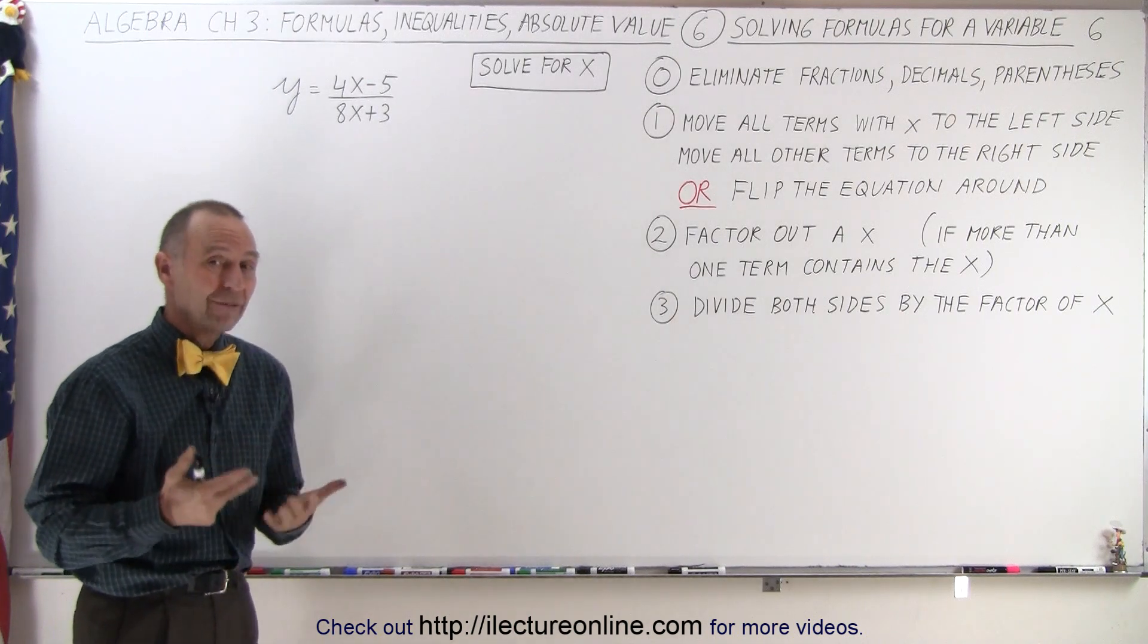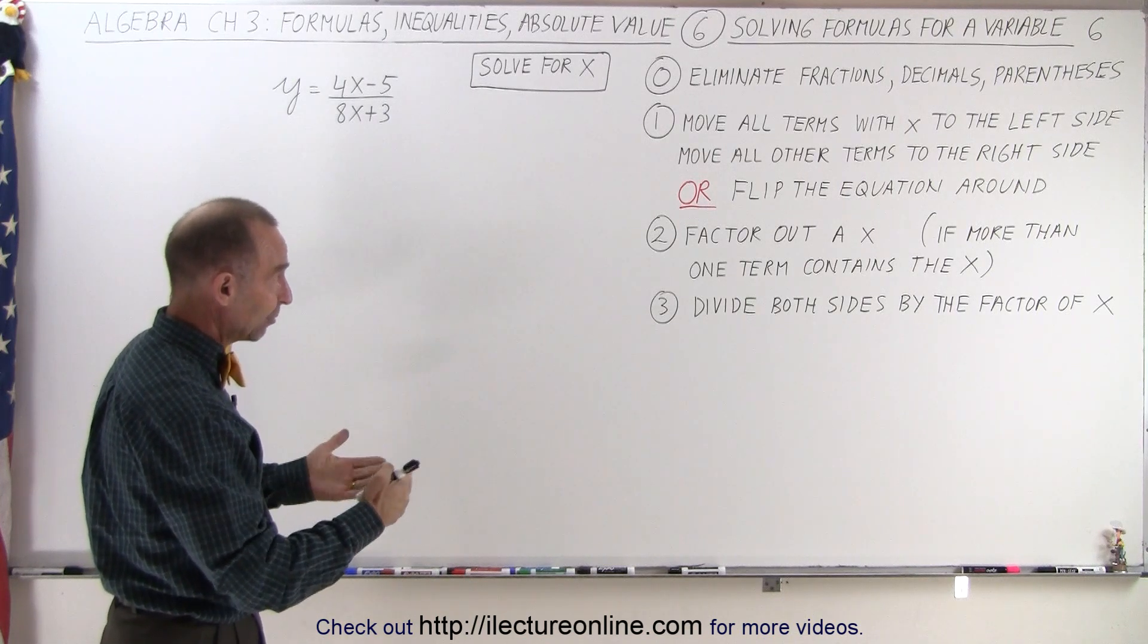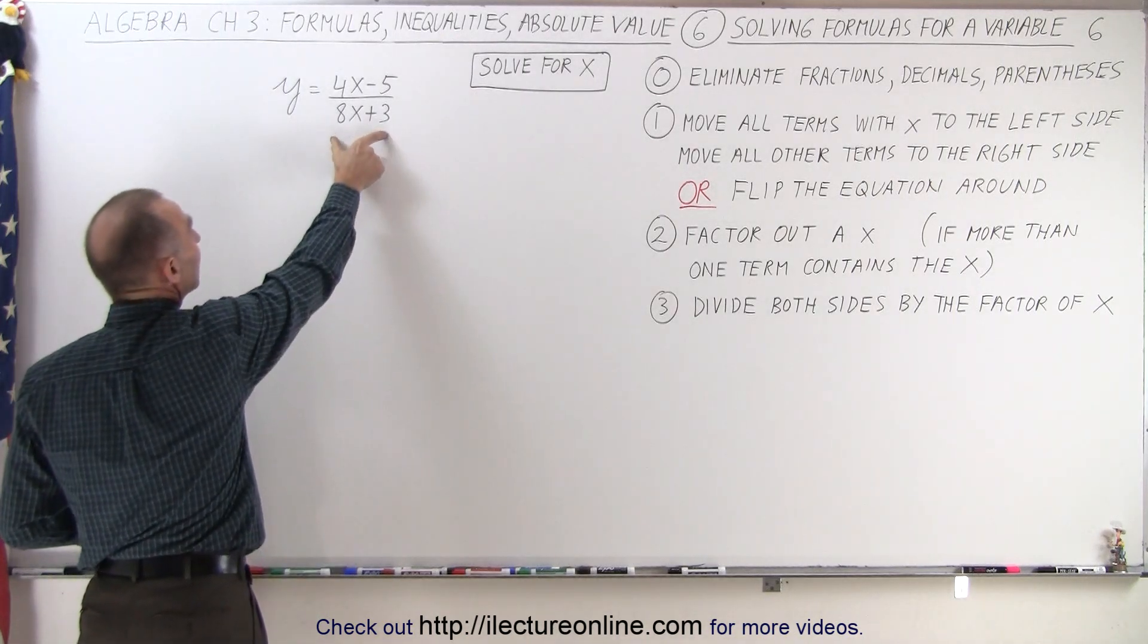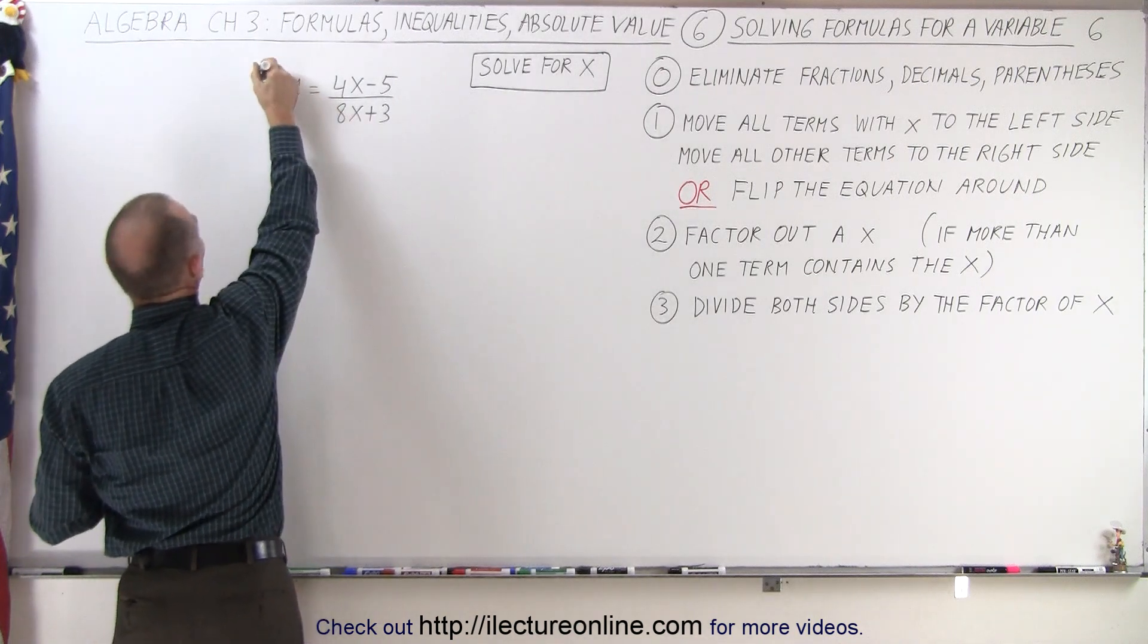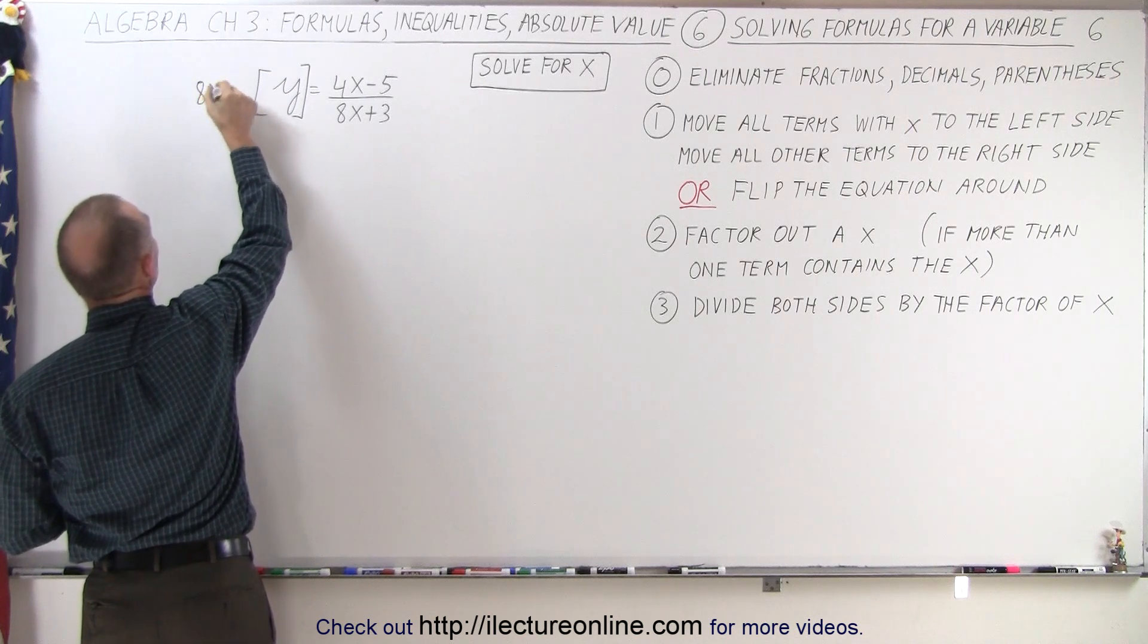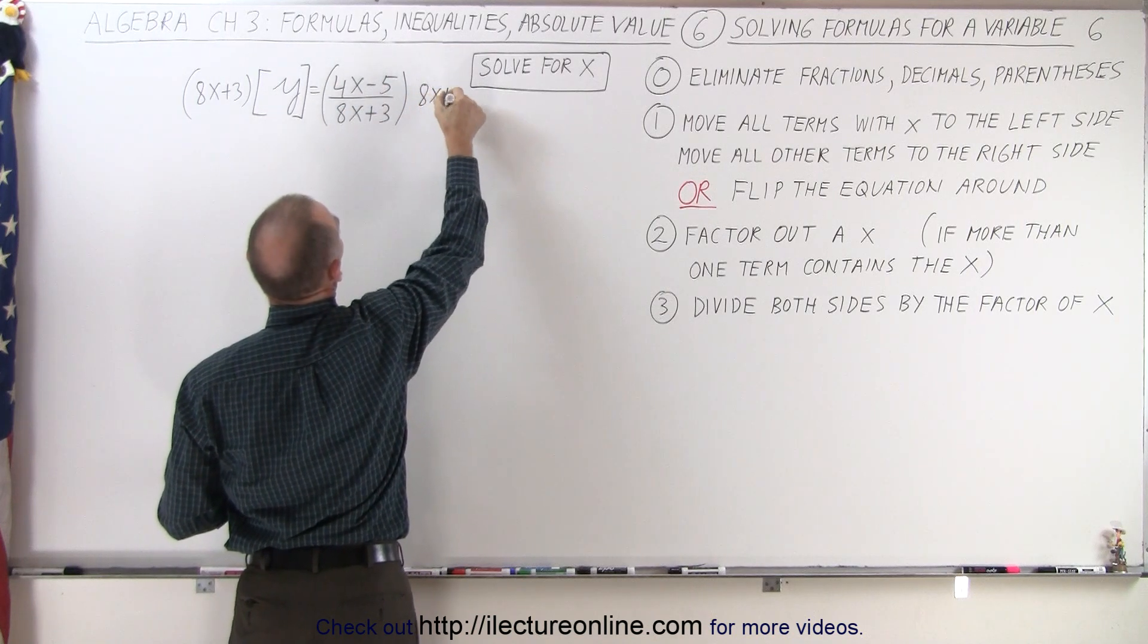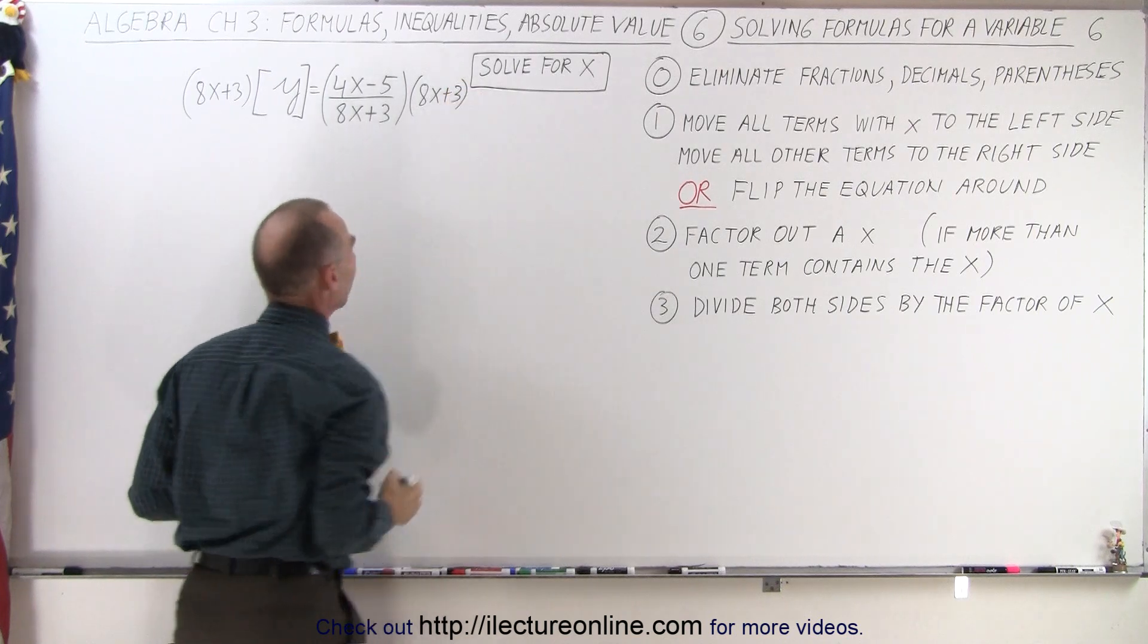So here we do have a fraction, so we are going to have to use step 0, eliminate fractions, decimals, and parentheses. So in this case we're going to multiply both sides of that equation by the denominator on the right side, which means on the left side I'm going to multiply that times 8x minus 8x plus 3. And I'm going to do the same to the right side, 8x plus 3. This should be 3 right here.